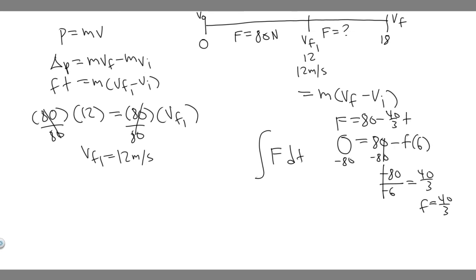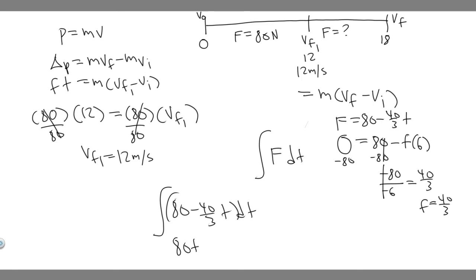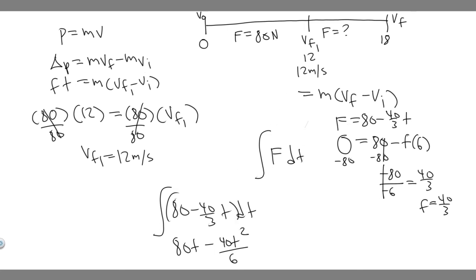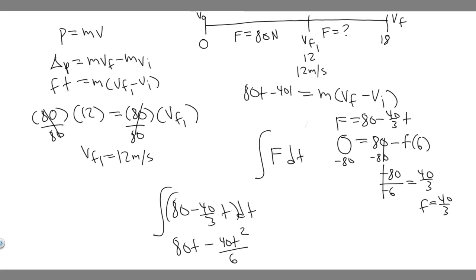Now we integrate f(t) = 80 minus (40/3)·t with respect to t. The integral of 80 is 80t, and the integral of (40/3)·t gives (40/3)·(t²/2) = 40t²/6. So the integral evaluates to 80t minus 40t² over 6. This expression equals m times (v final minus v initial).